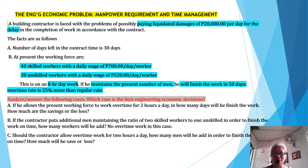Case 2: In order to finish the work on time, how many workers will he add? There is no overtime work in this case. Case 3: Should the contractor allow overtime work for 2 hours a day, how many men will he add in order to finish the work on time? How many will he save or lose? Which case is the best engineering economic decision?